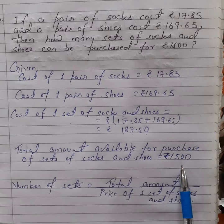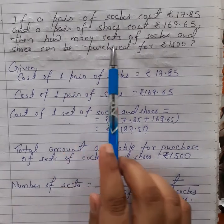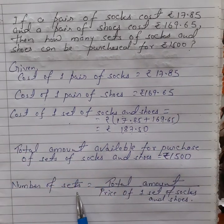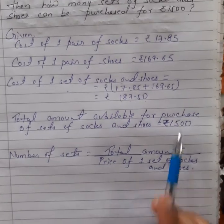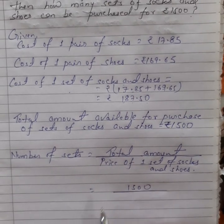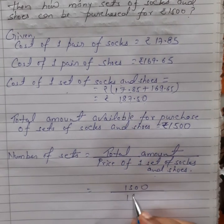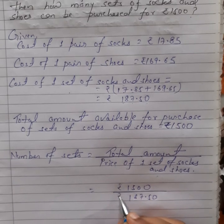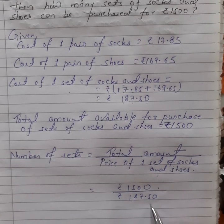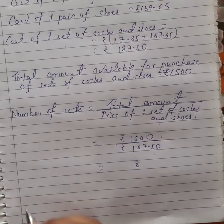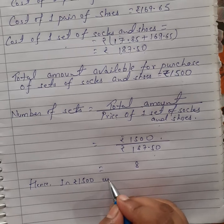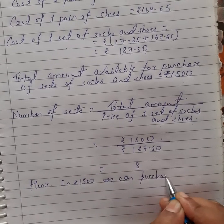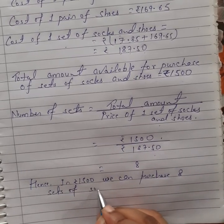The total amount available for purchasing is 1500. We have to find out how many sets of socks and shoes — that is the number of sets. Number of sets is equal to total amount that is 1500 divided by the price of one set of socks and shoes, which is rupees 187.50. When we divide 1500 by 187.50 we get 8.